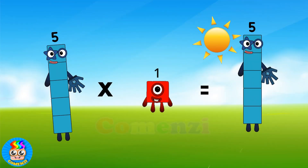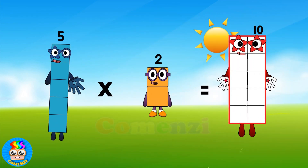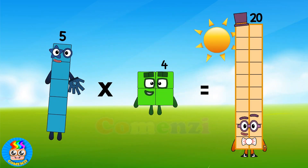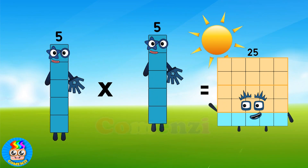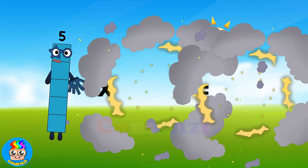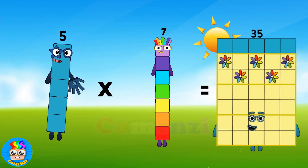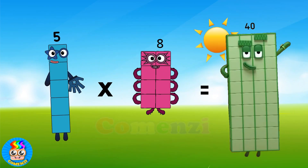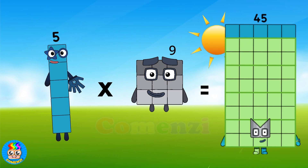5 times 1 is 5. 5 times 2 is 10. 5 times 3 is 15. 5 times 4 is 20. 5 times 5 is 25. 5 times 6 is 30. 5 times 7 is 35. 5 times 8 is 40. 5 times 9 is 45. 5 times 10 is 50.